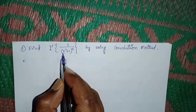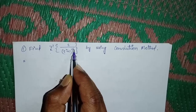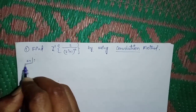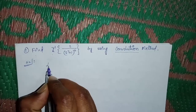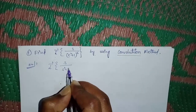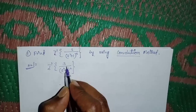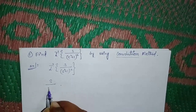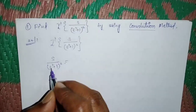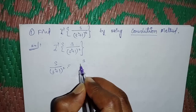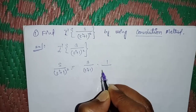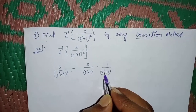Find the inverse Laplace transform of s/(s²+1)² using the convolution theorem. Consider the given data: L⁻¹ of s/(s²+1)². We can write s/(s²+1)² as s/(s²+1) multiplied by 1/(s²+1).